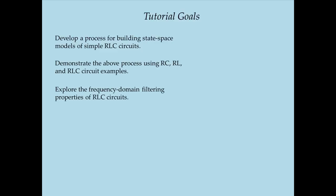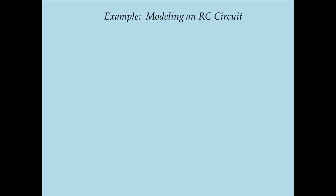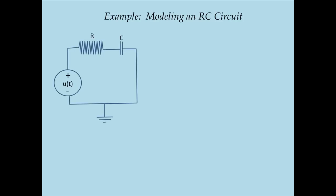Let's dive into the problem of modeling an RC circuit. Here's a diagram of a simple RC circuit. It consists of a voltage source that supplies a user-dictated voltage U as a function of time, a resistor R, and a capacitor C. These could be linear or nonlinear — I'm going to assume they're linear for simplicity. I want to develop a state-space model of this circuit.